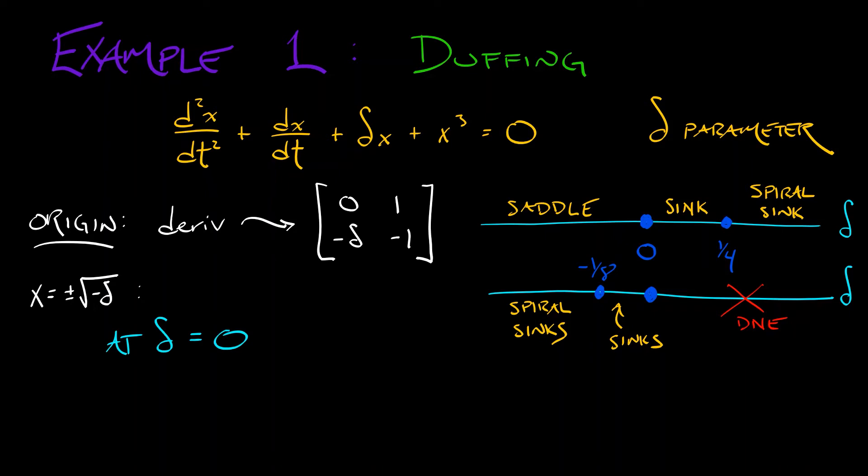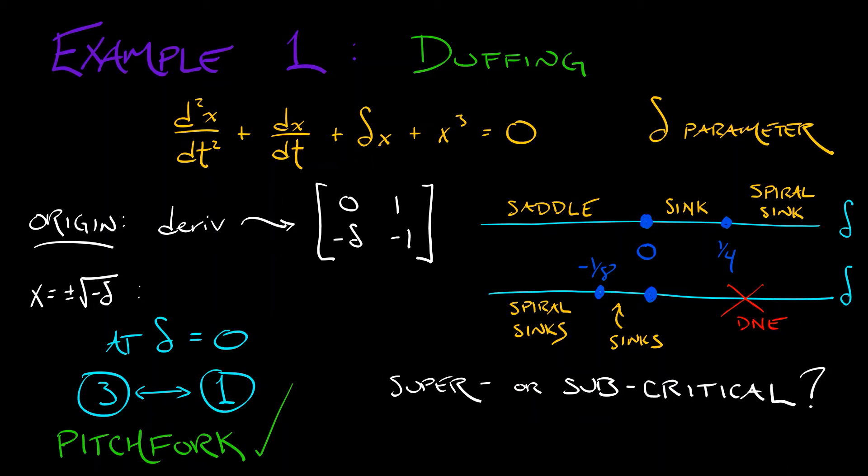So what this means, putting it all together, is that at the origin when delta equals zero we're going from one equilibrium to three equilibria. This is a pitchfork bifurcation. The question is, is it supercritical or subcritical?